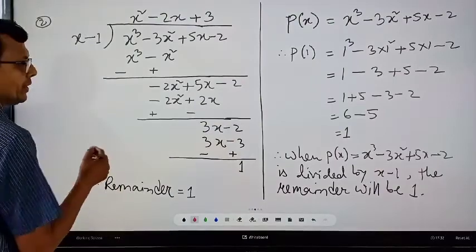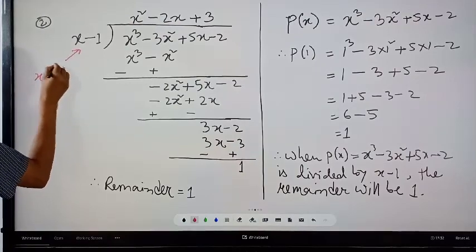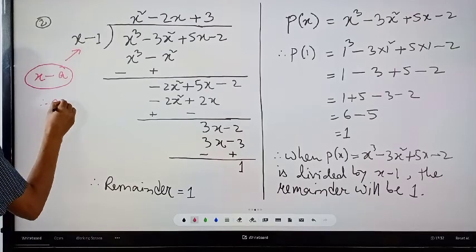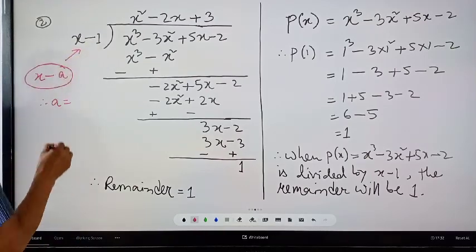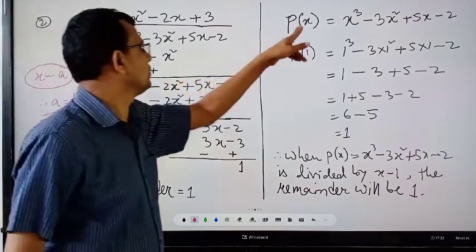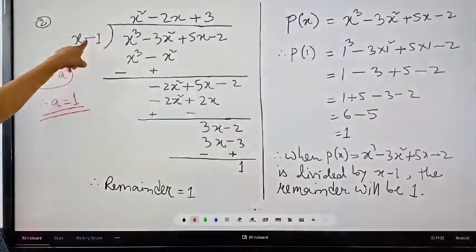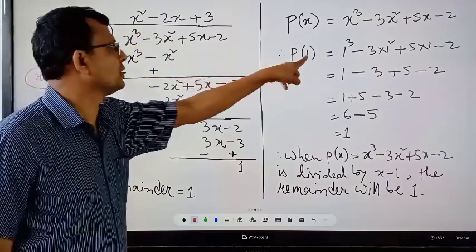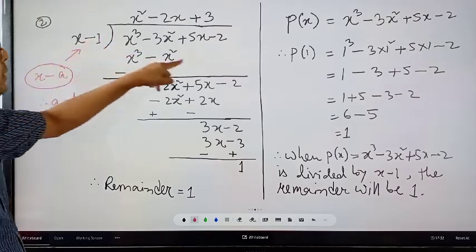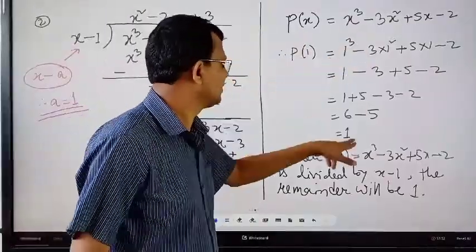If you compare x minus 1 with x minus a, then a is equal to 1. Note that when there is a minus sign and a negative value, we take the positive value. If the divisor has a plus sign, we take the negative value. So if you find the value of p(1), we get 1.